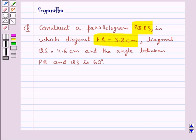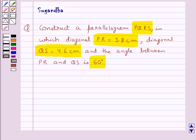Diagonal QS is equal to 4.6 cm and the angle between PR and QS is 60 degrees.